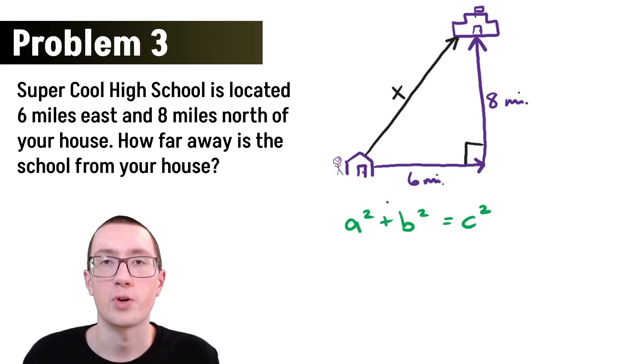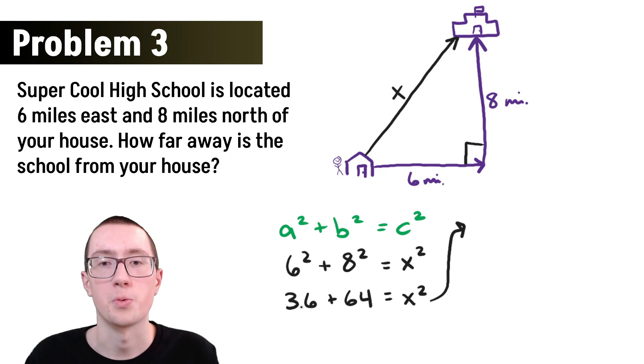So this diagonal side is going to be c. And then these are going to be a and b, it doesn't matter which. So if we plug in what we know for a and b, we can solve for c and find out the length of this side. So we'll call this one a. So a is going to be 6. So 6 squared plus, and then we know that the other side is 8. So it's going to be 8 squared equals c squared. Or in this case, we're going to call it x because that's the number we're looking for. Now if we just simplify this down, we can figure out what x is. So 6 squared, that means 6 times 6, which is 36. And then 8 squared, that's 8 times 8, which is 64. So 36 plus 64, you can put that in your calculator, you'll get 100.